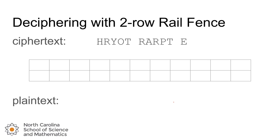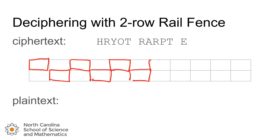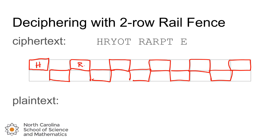Deciphering these types of messages is only a little bit tricky. I like to take the grid and highlight which of the boxes would have had letters in them during the ciphering process. Then, starting at the beginning of the cipher text, we can write the letters across the top row until we run out of spaces, and then continue with the cipher text words in the bottom row.